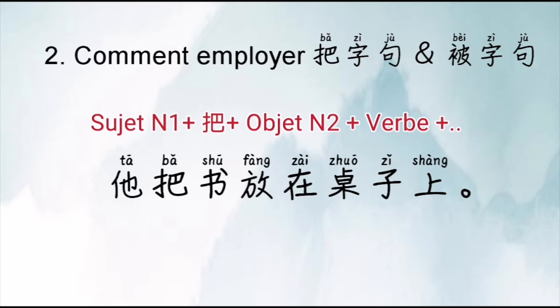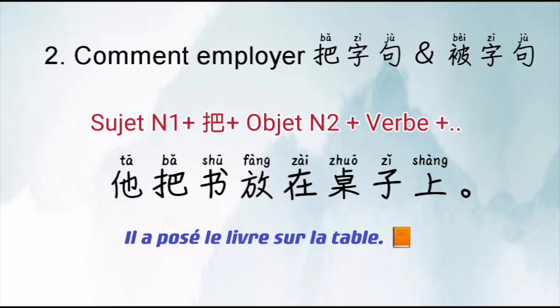Troisième exemple : le verbe veut dire poser, déposer quelque chose. ZAI ZHO ZHANG, c'est sur la table, ou au-dessus de la table. Donc cette phrase veut dire : il a posé le livre sur la table.